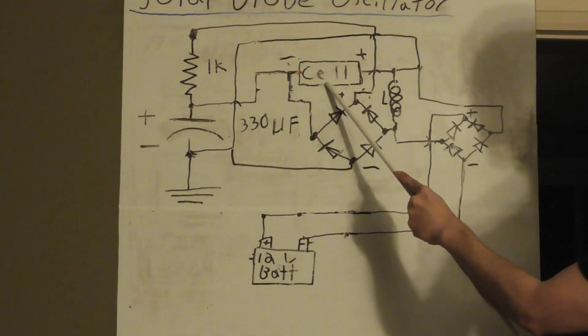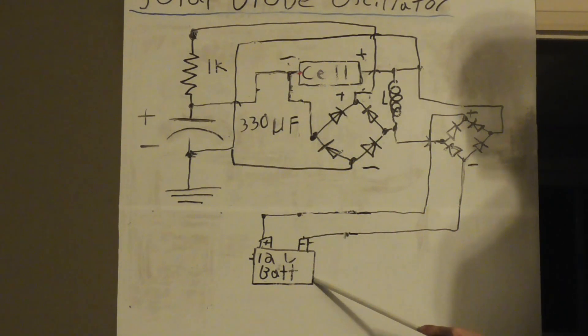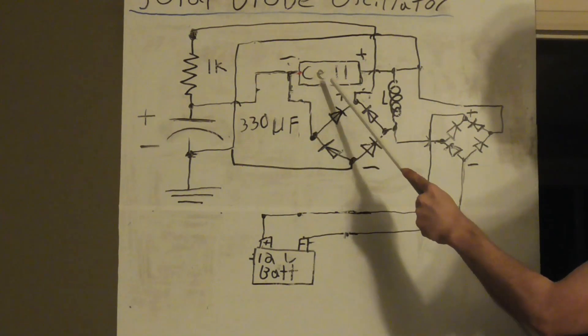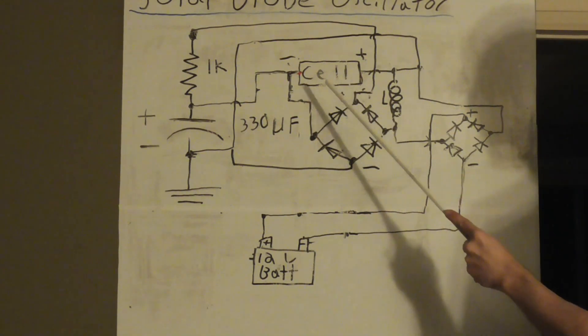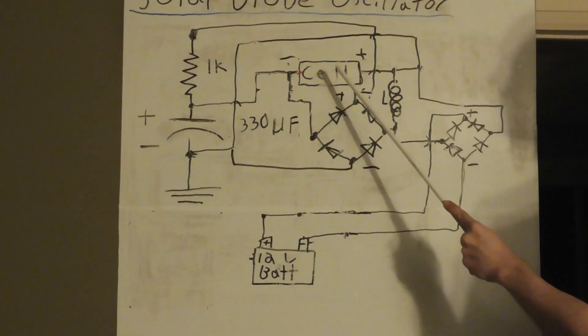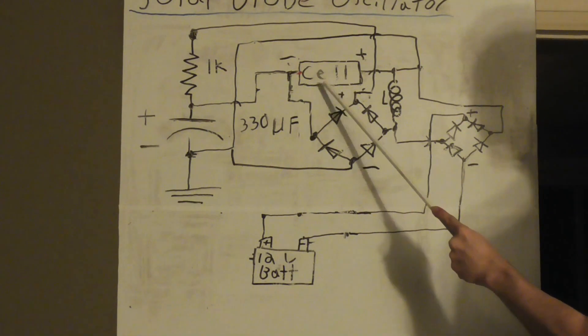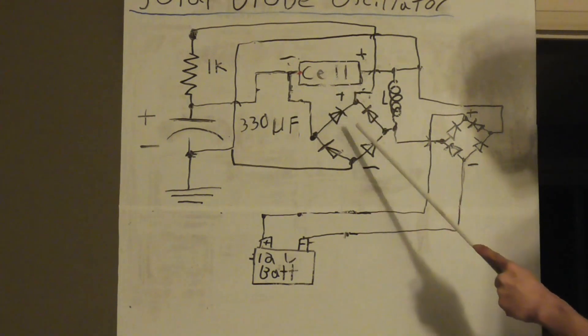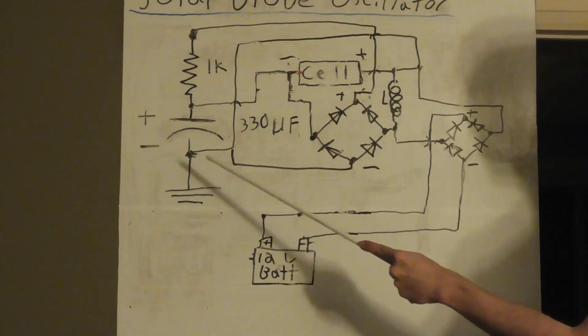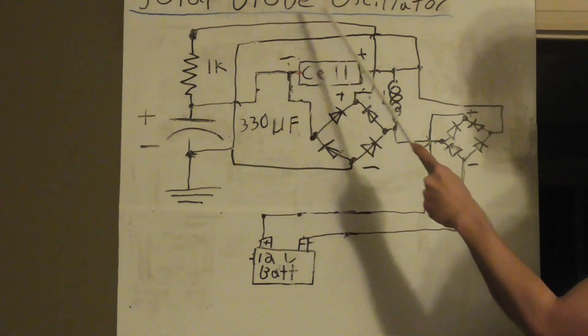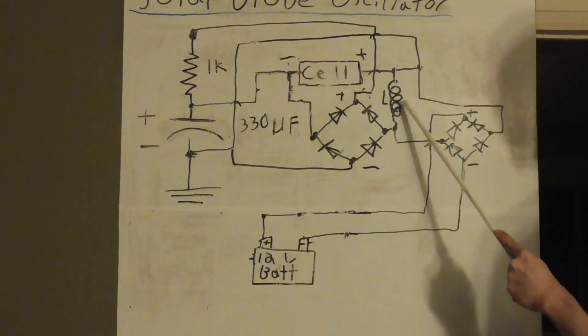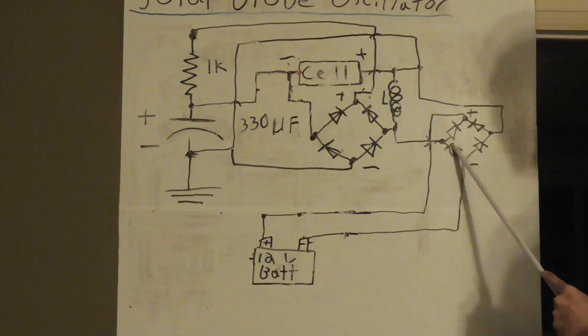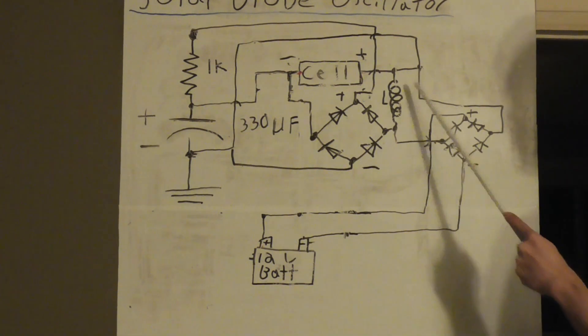Now we're using the cell at nighttime. Even though it has maybe a volt or close to it, it's going to be more than enough because all we need in forward mode is about 0.6 volts. The nighttime power through the rectifier is going to be more than enough to trigger the relaxation oscillator to provide a low level nighttime trigger, so that even at nighttime we might still get about 24 volt pulses of the back EMF.